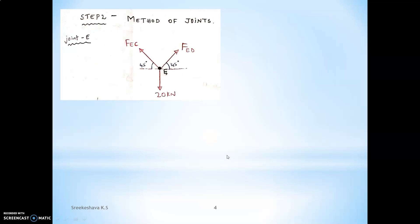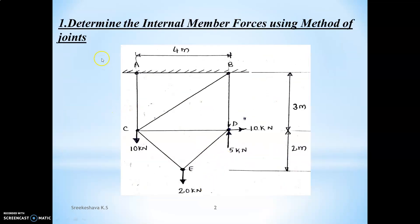Next, step 2 is method of joints. Observe each joint. If you consider joint C, there are 4 unknown members — not possible. If you consider joint D, there are 3 unknown members — also not possible. Coming to joint E, there are only 2 unknown members. Therefore, the only possible starting joint is joint E, with two unknown members.